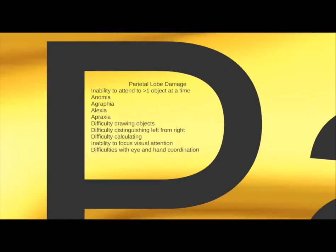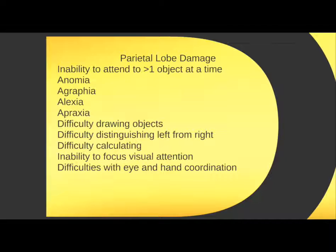Next, the parietal lobe is essentially where we start to interpret things. We can pull in vision, audible input, and sensation, but in the parietal lobe we have to start to interpret what it all means. A deficit here leads to the four A's: anomia, agraphia, alexia, and apraxia. In addition, there is difficulty drawing objects, distinguishing left from right, and calculating. The parietal lobe is really about processing — information comes in, you process the difference, and exchange information across the corpus callosum.